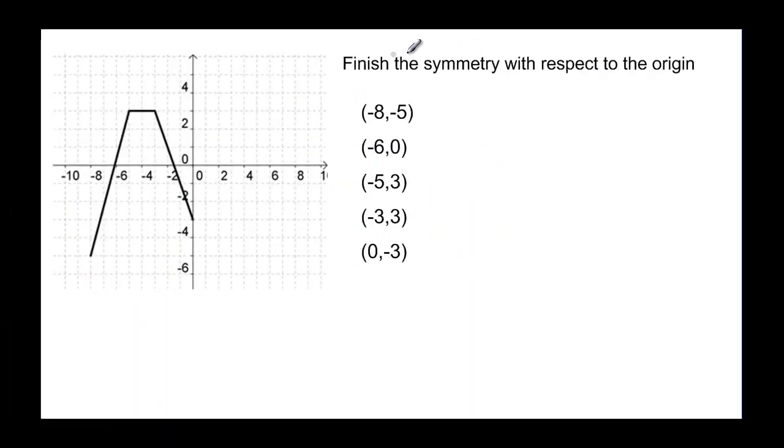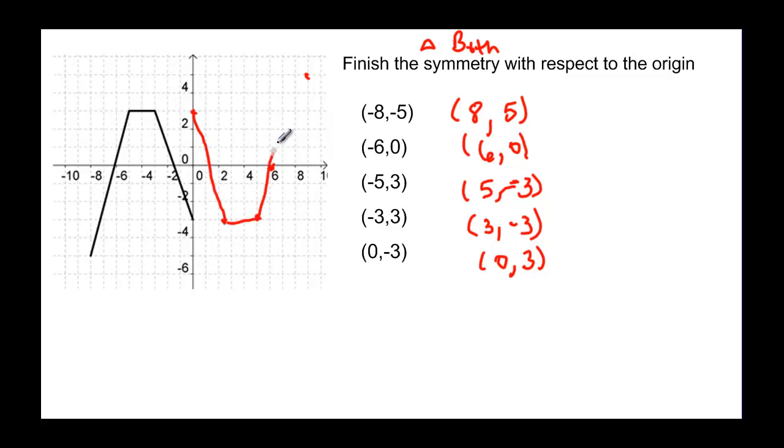Let's try it with the origin. This means that you change both signs. Negative 8 is going to become positive 8, and negative 5 is going to become positive 5. So 8 and positive 5. And we have 6 and 0, changing the signs on both. Here we get positive 5 and negative 3. So positive 5 and negative 3. And we have, changing both signs, we have positive 3, negative 3. And then we have this 0, which doesn't change sign, but the negative 3 becomes a positive 3. And we have this point here. So if I connect all my points, this one's a little bit harder to see that it is symmetrical about the origin, because it's not even connected anywhere. But if you spun your paper, you would see exactly the same graph if you do it 180 degrees.